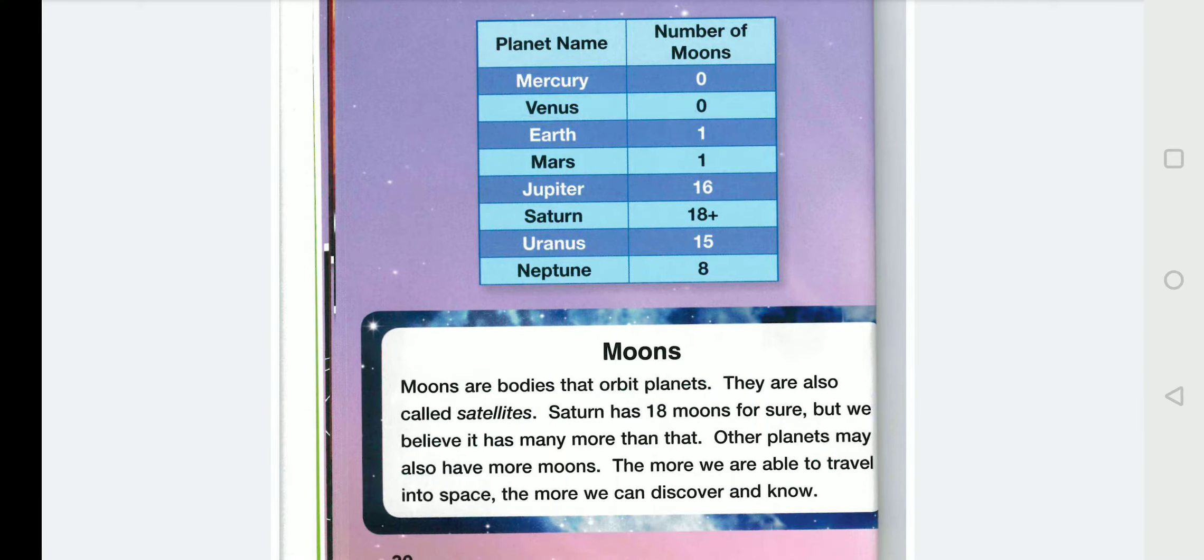Moons are bodies that orbit planets. They are also called satellites. Saturn has 18 moons for sure, but we believe it has many more than that. Other planets may also have more moons. The more we are able to travel into space, the more we can discover and know.